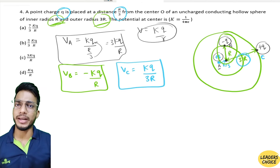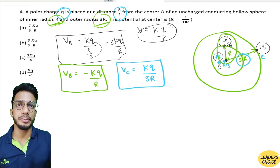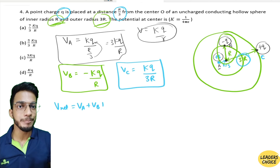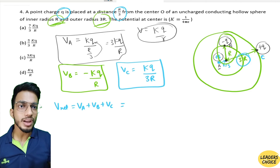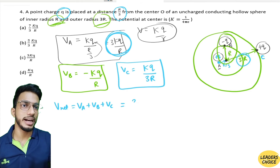We now calculate the net potential. Since potential is a scalar quantity, we simply add all three contributions: V_net = V_A + V_B + V_C = 3kq/r − kq/r + kq/3r.